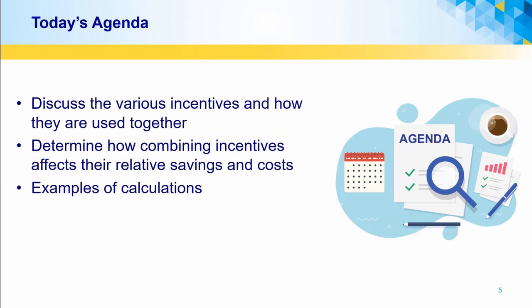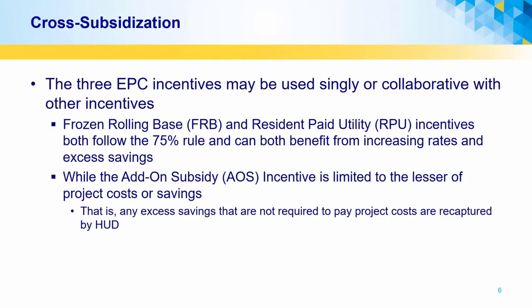The vignette on cross-subsidization will also consider how incentives combine support for each other within a cash flow, how to create excess savings, and how cross-subsidy calculations increase or reduce savings recapture. For today's agenda, our discussion will walk us through using the various incentives singly and in combination, combining the savings and cost streams from the various incentives, and discuss examples of cross-subsidization in different scenarios.